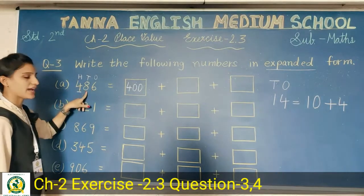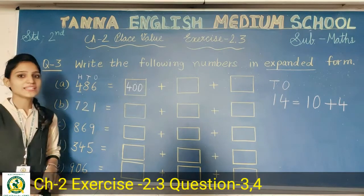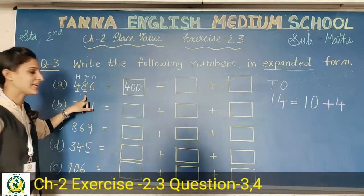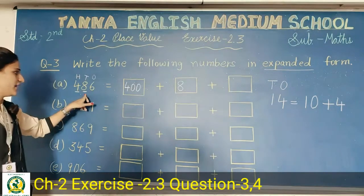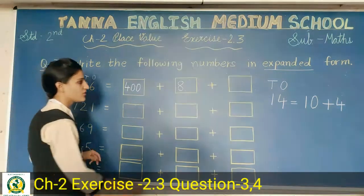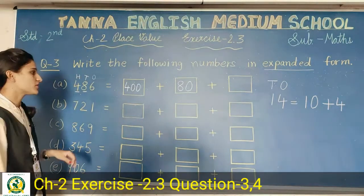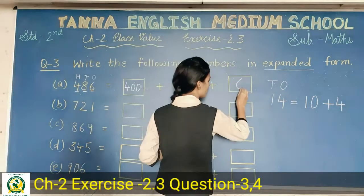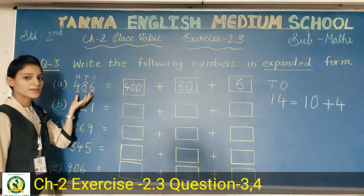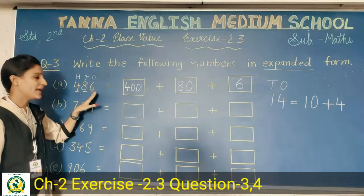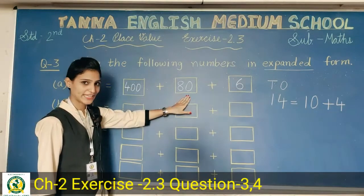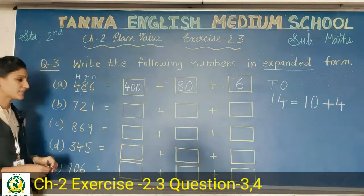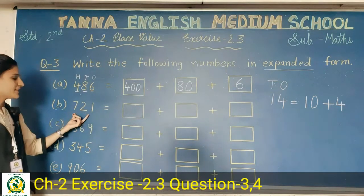Eight is at tens place — in tens, how many zeros do we have? One zero. So after writing eight, you put one zero, making eighty. Then last, six is at ones place, so no zeros come with it — only six. So the expanded form of four hundred and eighty-six is: four hundred plus eighty plus six.